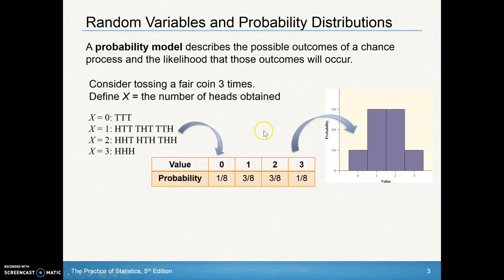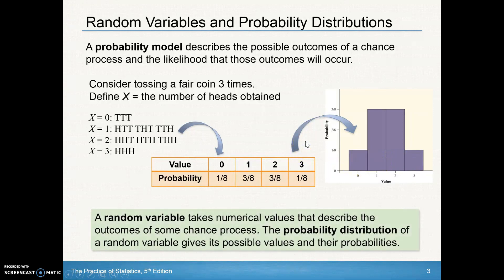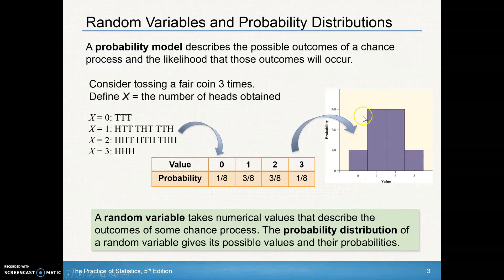We can take a look at what that distribution looks like — this is just a histogram of our results. A random variable takes numerical values that describe the outcomes of some chance process. The probability distribution of a random variable gives the possible values and their probabilities. That random variable is X, describing the number of heads obtained. We could describe its shape, outliers, center, and spread — remember SOCS, S-O-C-S.